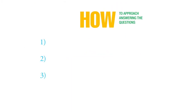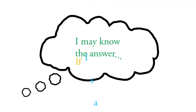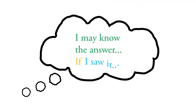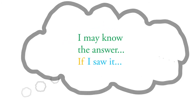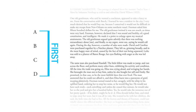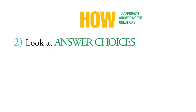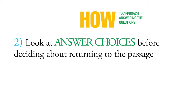For the second group of questions, these are the kind where you think you may know the answer if you saw it. So you're going to go through the answer choices first. Even if you think you might have to go back to the passage, you're still going to look at the answer choices before deciding about returning to the passage.